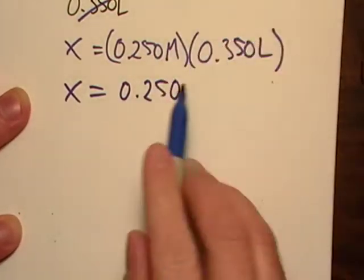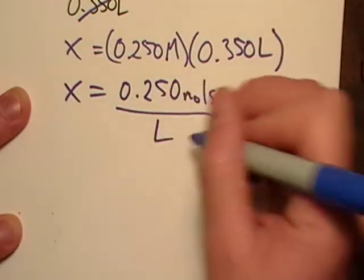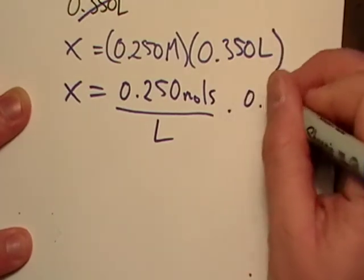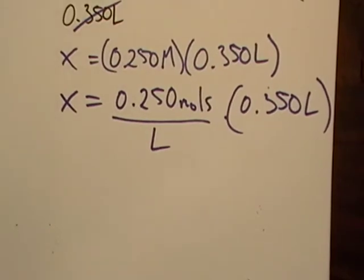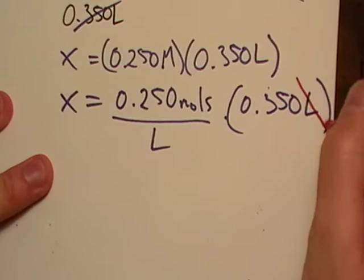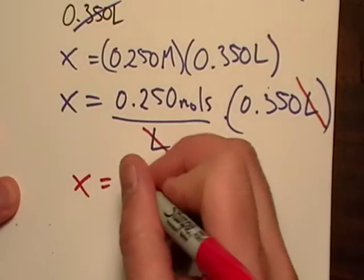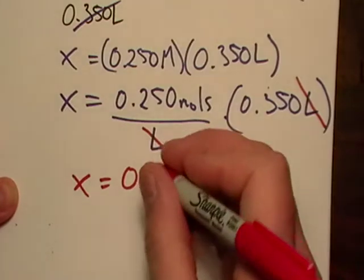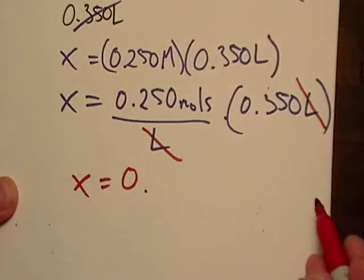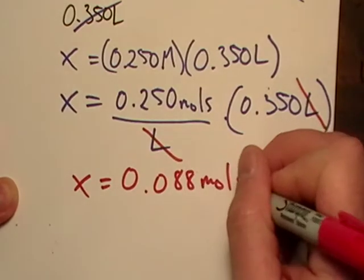Um, now what I'm going to do is, instead of using this big M, I'm going to go back to what the actual meaning of it is, and that's moles per liter. And I've got 0.350 liters. Okay, well that works out pretty good, doesn't it? Because the liters will cancel, just like always, they always cancel. And it looks like I'm going to use three significant figures, and that's going to be 0.088 moles.